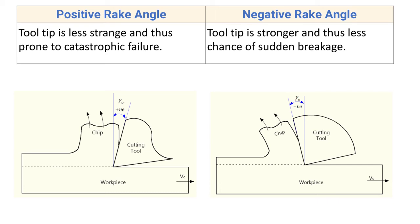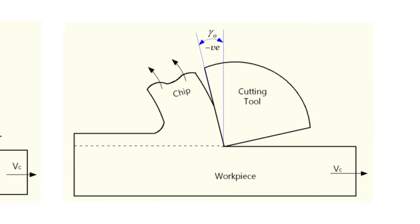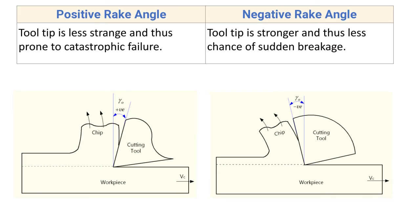For negative rake angle, the tool tip is stronger and thus there is less chance of sudden breakage. There is more material at the tool tip compared to positive rake angle, and as there is more material the tool can bear more forces, making the tool stronger with less chance of breakage.